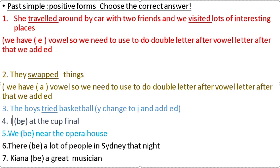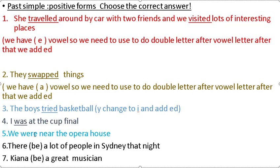When we have I, he, she, we use 'was.' I was at the cup final. For subject 'we': we use 'were.' We were near the opera house. When we have subject 'they,' we also use 'were.'